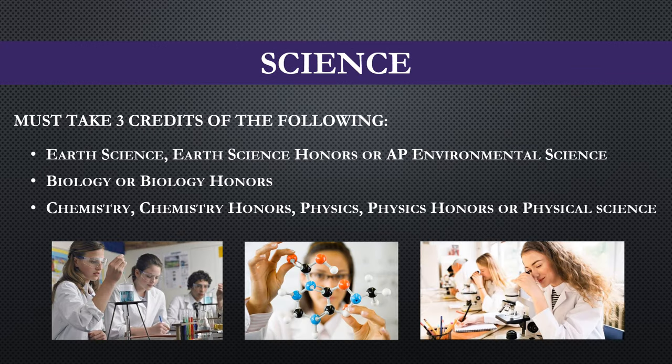There are three sciences that are required for graduation. Those three credits must come in these areas: Earth Science, Biology, and Physical Science. The sequence of when you take these courses can vary. Rising 10th graders, if you took Earth Science this year, you will be selecting Biology or Biology Honors for next year. If you took Biology, you will be selecting your Physical Science for next year — that could be Chemistry Honors, Chemistry, Physics Honors, Physics, or Physical Science.